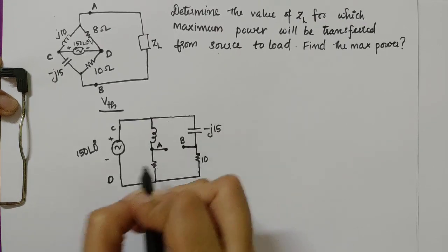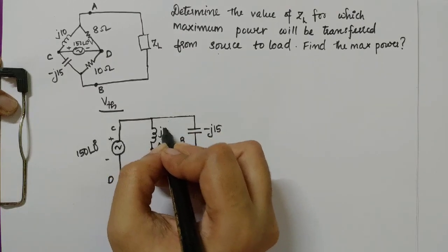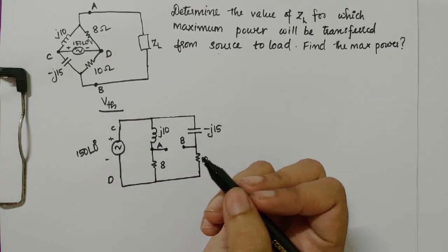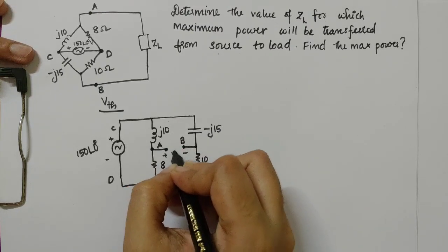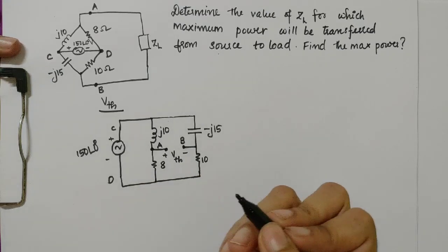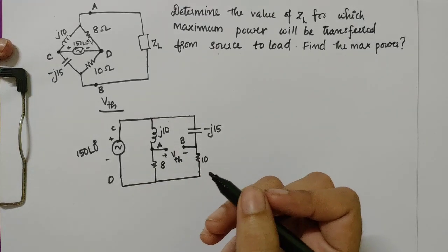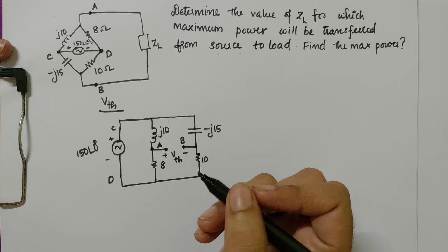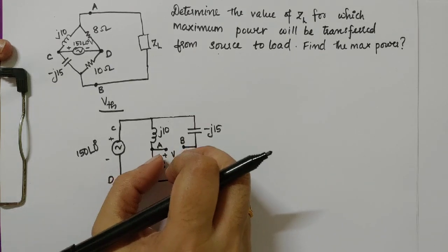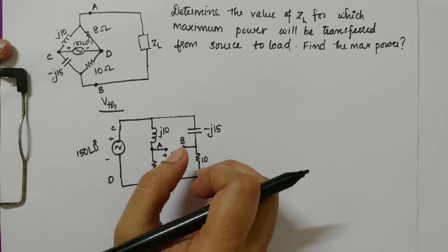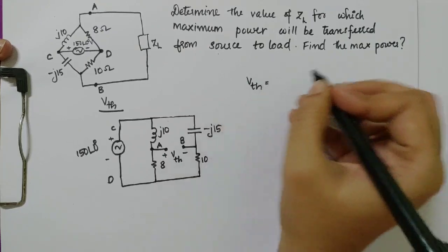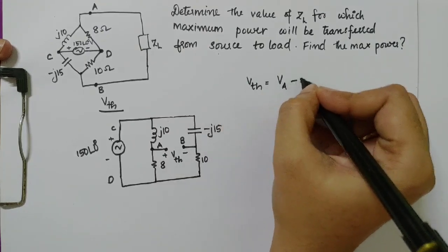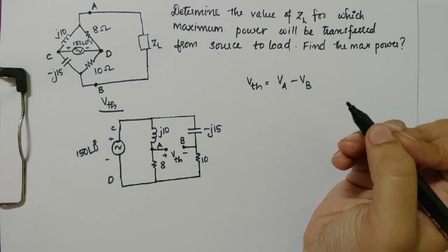So this is 10 Ω, this is 8 Ω, and this is j10 Ω. In the open circuit, we redraw the circuit. This is the plus-minus voltage — the Thevenin voltage. The Thevenin voltage is the voltage across terminals A and B. V_Thevenin is equal to Va minus Vb.